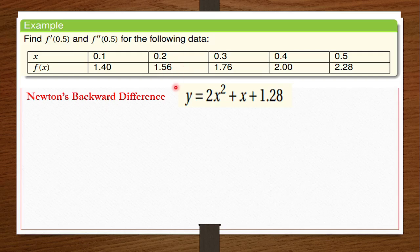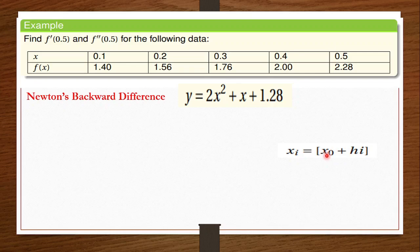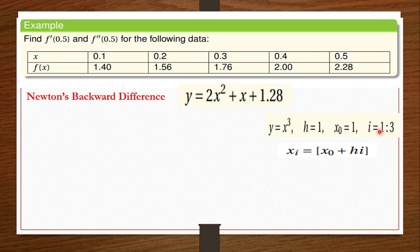In case you are not given this table, you will have to draw it yourself. The equation is x_i equals x_naught plus h times i, where x_i is the x value, h is the step length, and i is the index. Here h equals 1, x_naught equals 1, and i runs from 1 to 3, meaning x values end at 3.